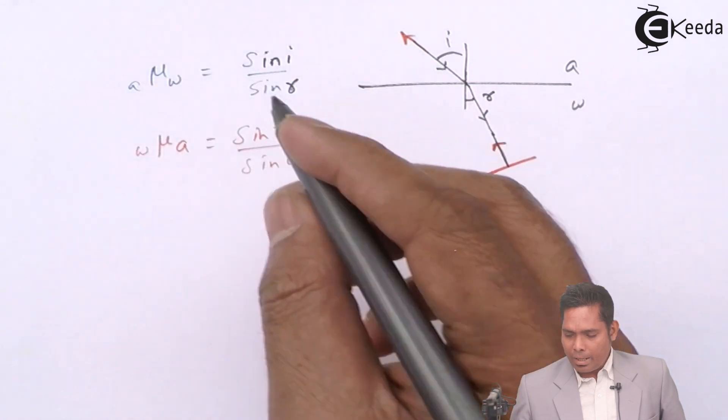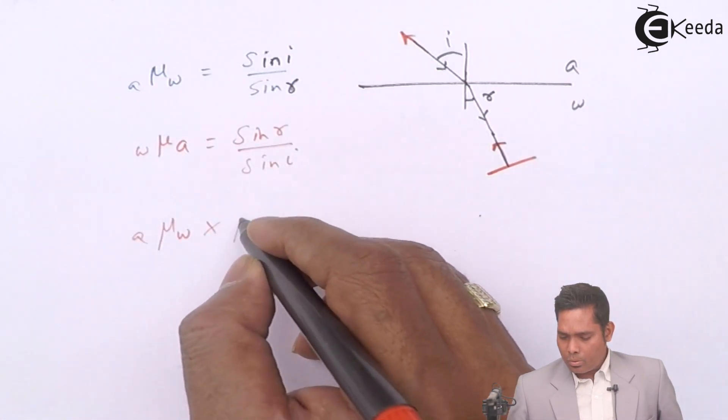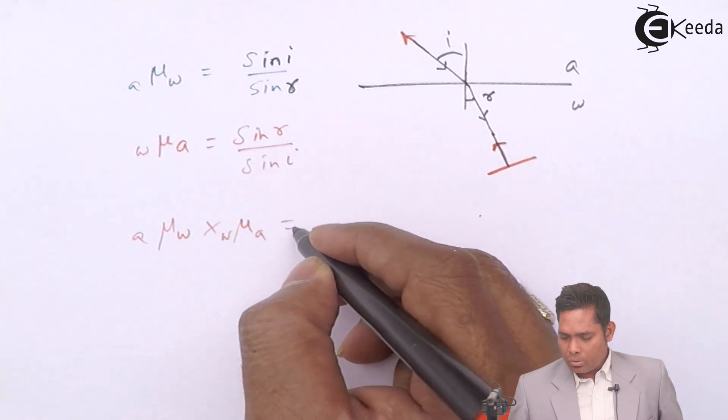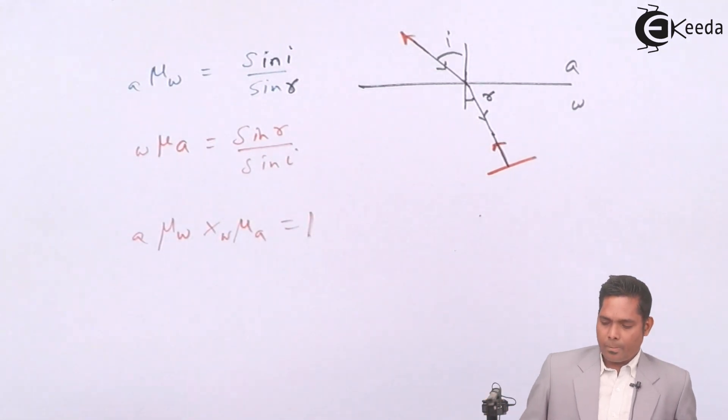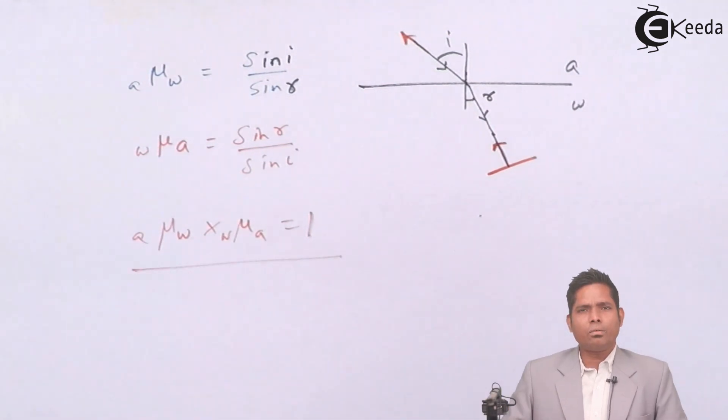So if you multiply these two together, then I get mu w a into mu a w equals to 1. This is known as Principle of Reversibility. So thank you.